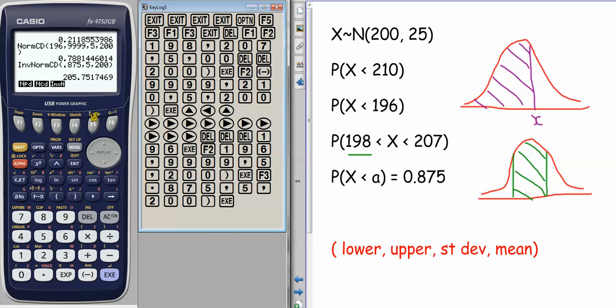Obviously, for all of these, you've got to always be thinking, does that make sense? Because if you put the wrong values into your calculator, the calculator will just do what it's told, and you'll get the wrong answer. For example, for a probability of 0.875, we'd expect that to be above the mean. So an answer of 205 seems realistic. If we put the wrong thing in, and we got an answer of 98, then we know that something had gone wrong.